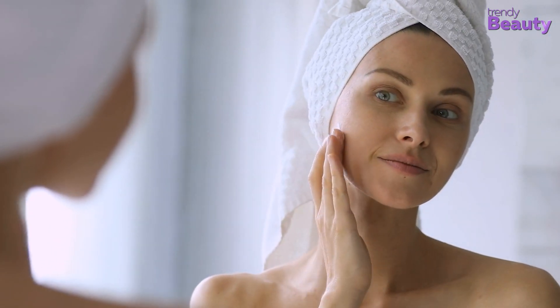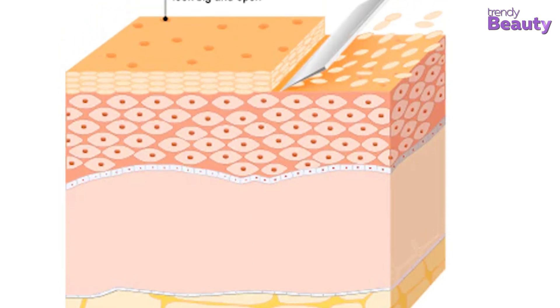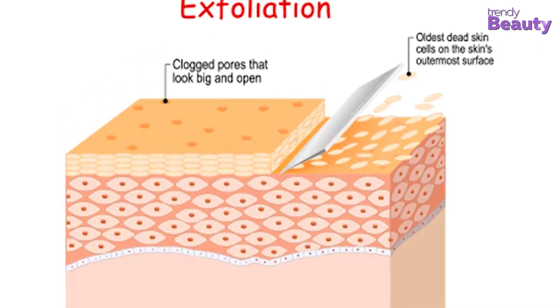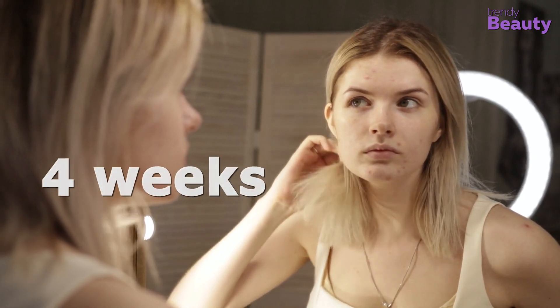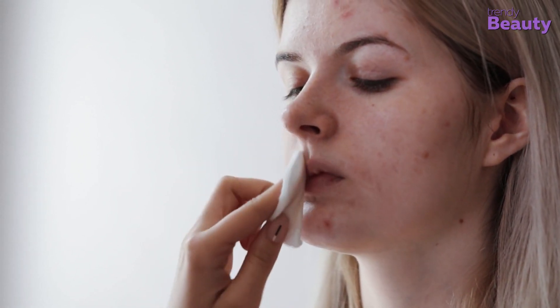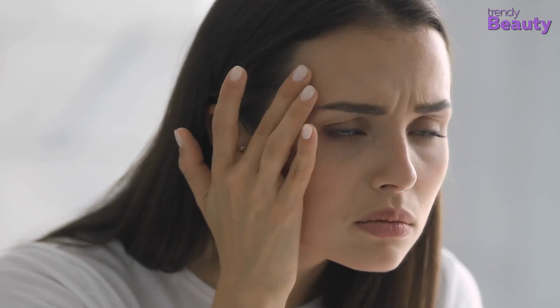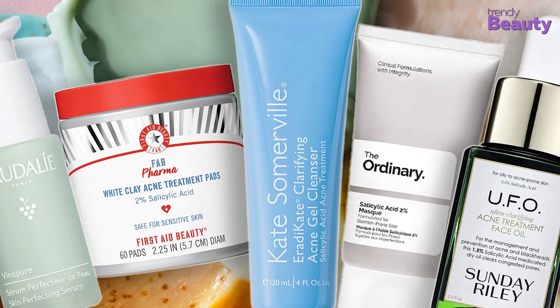Moreover, it also removes surface oil and evens out your skin texture. One of the unique benefits of using salicylic acid is that it exfoliates your skin and removes dead skin cells, allowing your pores to shrink in size. But salicylic acid works slowly — it usually takes 4 weeks to show results. Using salicylic acid at high concentration can cause side effects and irritation, but most over-the-counter products don't contain enough concentration to harm you.